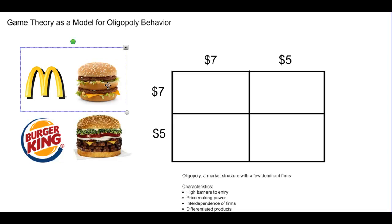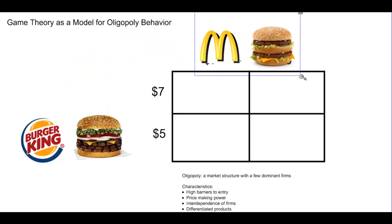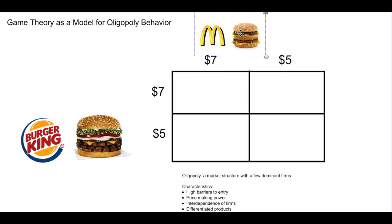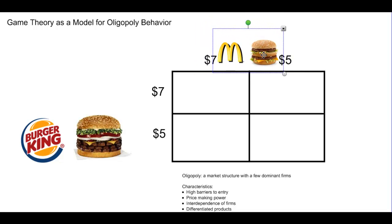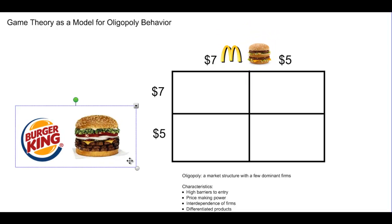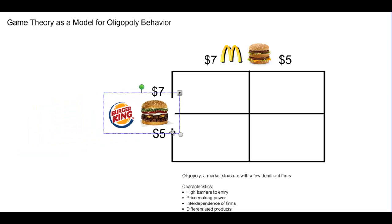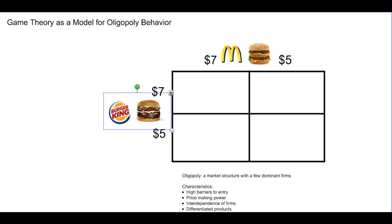Both the decisions of McDonald's and Burger King will be represented in a table known as a payoff matrix. In our payoff matrix we can see that McDonald's can either price its Big Mac meal at seven dollars or five dollars. Likewise Burger King, the competitor of McDonald's, can produce its Whopper meal at a price of seven dollars or five dollars.